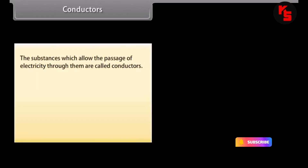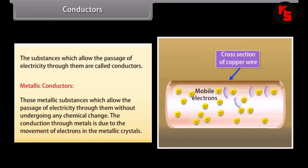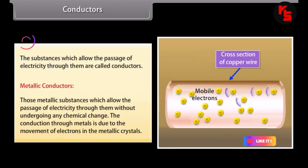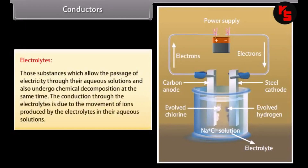Conductors. The substances which allow the passage of electricity through them are called conductors, classified into two categories: metallic conductors and electrolytes. Metallic conductors are metallic substances which allow the passage of electricity without undergoing any chemical change; conduction through metals is due to the movement of electrons in metallic crystals — for example, copper and silver. Electrolytes are substances which allow the passage of electric current through their aqueous solutions and also undergo chemical decomposition. Conduction through electrolytes is due to the movement of ions produced in their aqueous solutions — for example, acids and bases.